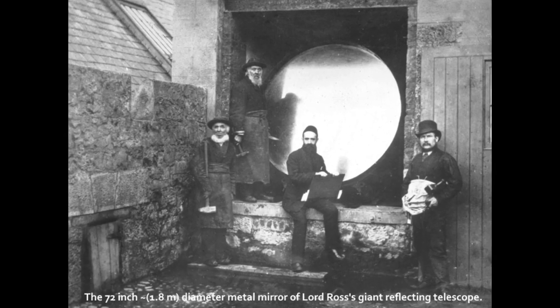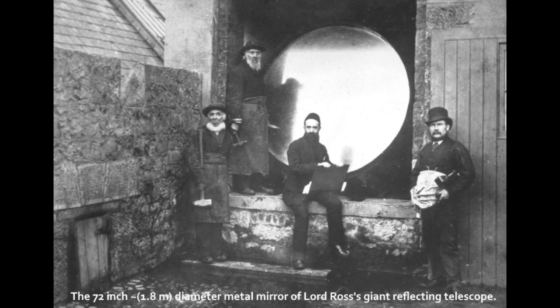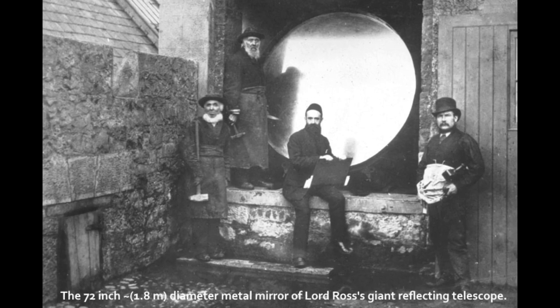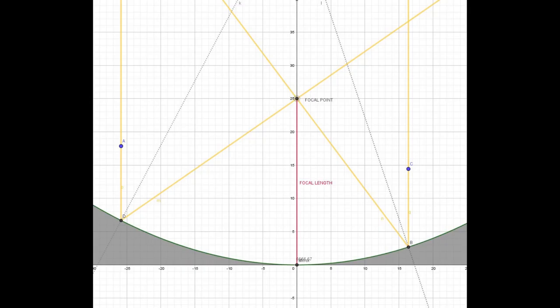A cool thing about reflectors. First, mirrors are much cheaper than lenses and so the diameter of reflectors tends to be much wider than with refractors. Second thing, reflectors don't suffer from chromatic aberration. They reflect light no matter what the color is, so no corrections needed.